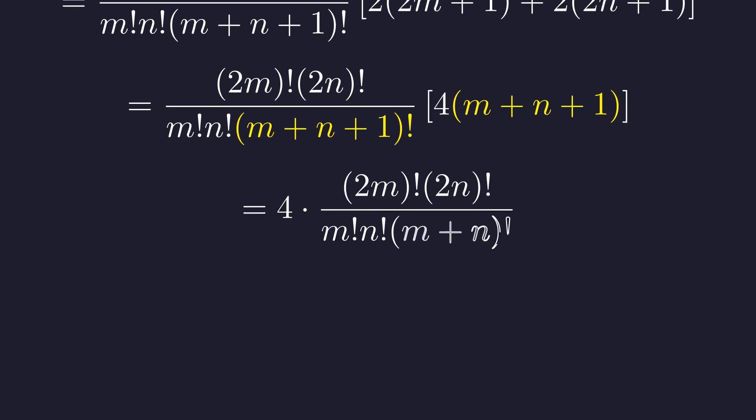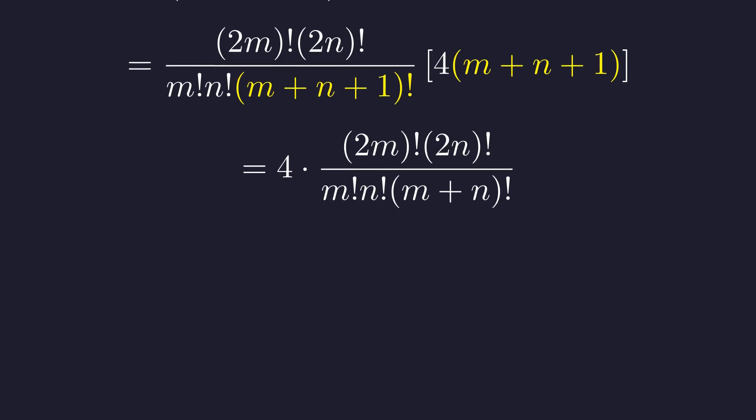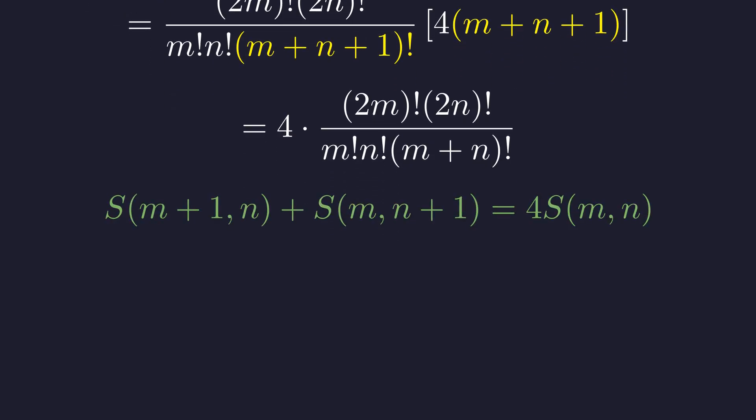The cancellation is beautiful. 4 times m plus n plus 1 divided by the factorial of m plus n plus 1 becomes just 4 divided by the factorial of m plus n. So we're left with 4 times our original expression. And there we have it. This remarkably clean recurrence relation. This is exactly what we need to build our proof.